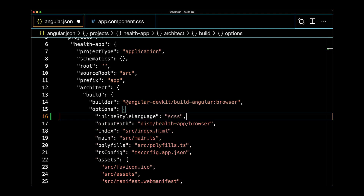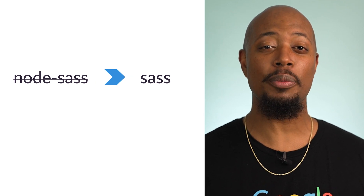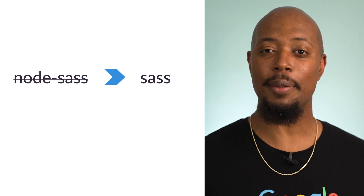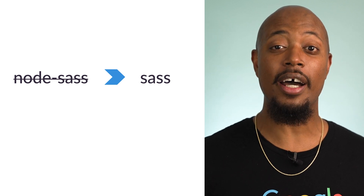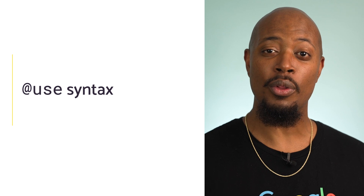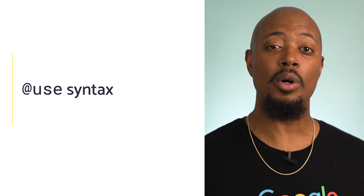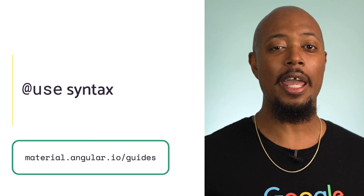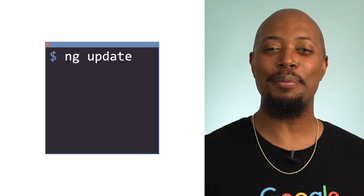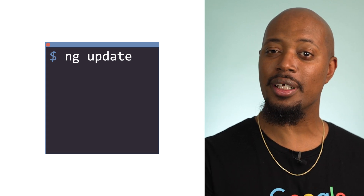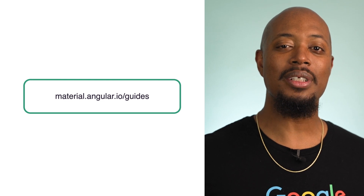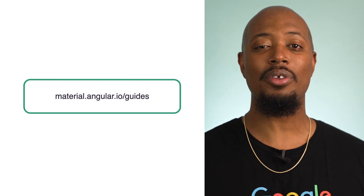New projects will have support for this by default. If you are using the Angular CDK or Angular Material, you're going to want to make some updates to your projects. We no longer support the node-sass package on npm, since it's deprecated and no longer actively developed — we're now using the sass npm package. The team has exposed some new APIs to be used with the new use syntax, and we've updated the guides on material.angular.io to showcase the new API surface. Use ng-update and this command will refactor any Sass import statements for the Angular CDK and Angular Material to use the at-use API. Check it out at material.angular.io/guides for updated examples and guides.